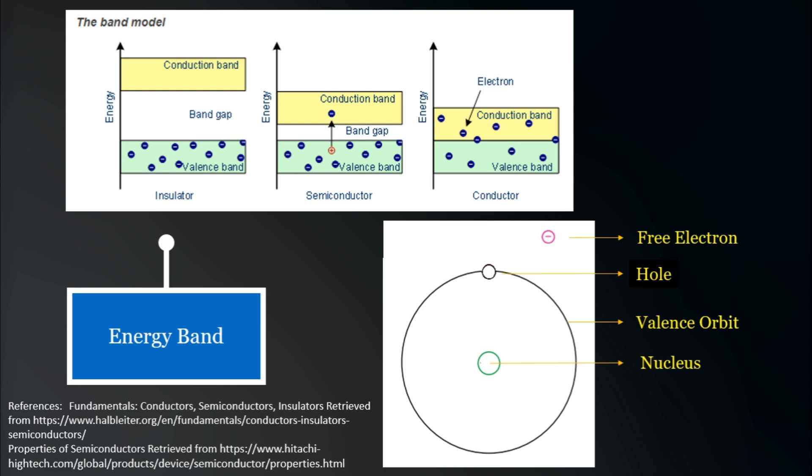We can think of the forbidden energy band as a toll gate, where before you can pass through, there is a need to pay a certain amount. In the case of valence electrons, its energy must exceed a certain level first, typically 1 electron volt for semiconductors and 15 electron volts for insulators before it goes into the conduction band. What's interesting about semiconductors is that when a valence electron reaches the conduction band to become a free electron, it will leave a hole behind on the valence band, and these holes are associated with a positive charge.